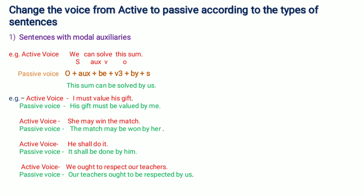Next example: 'He shall do it.' In this sentence, 'he' is the subject, 'shall' is the modal auxiliary verb, 'do' is the main verb, and 'it' is the object. The passive voice is: 'It shall be done by him.'